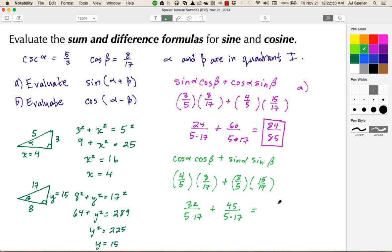Now let's add the numerators. 32 plus 45 equals 77. The denominator is 5 times 17, which equals 85. So my answer for part B is 77/85.